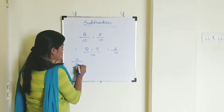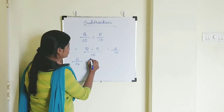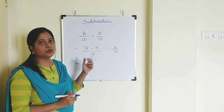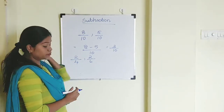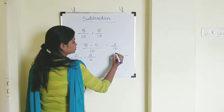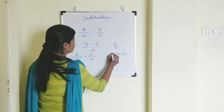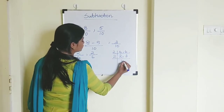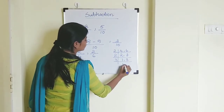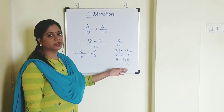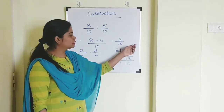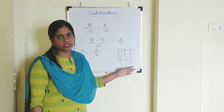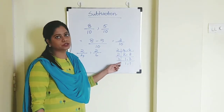Let's see one more sum. If the question is 2 by 4 minus 2 by 6, I cannot subtract this directly because the denominators are not the same. So what I'm going to do is find the LCM. As you can see, I've done the LCM using the long division method. 2 twos are 4, 4 threes are 12, so the LCM is 12.